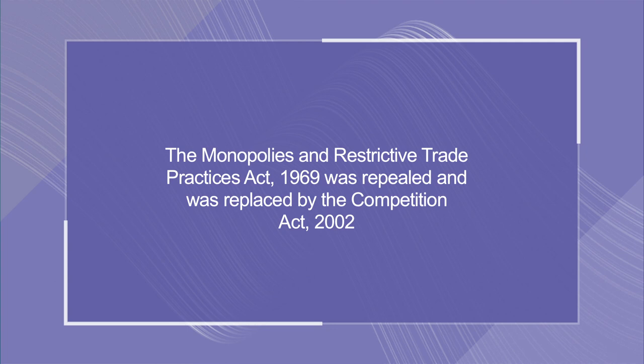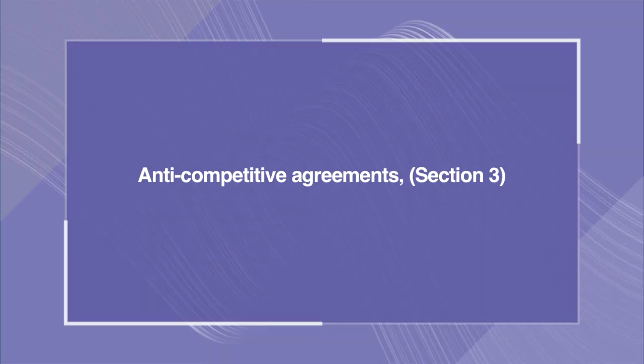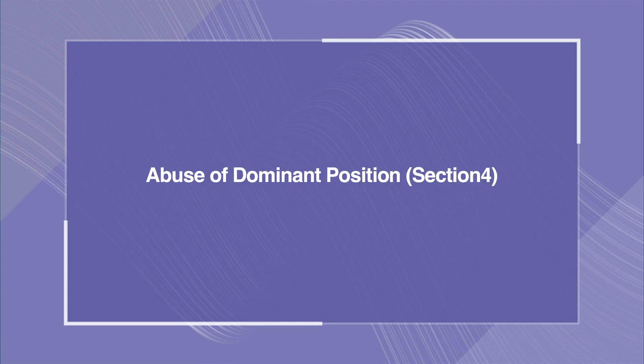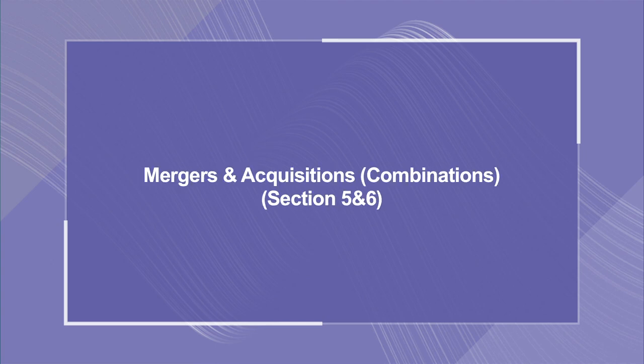Hence, the Monopolies and Restrictive Trade Practices Act, i.e., the MRTP Act 1969, was repealed and was replaced by the Competition Act 2002. The Competition Act provides for the establishment of the Competition Commission of India, which is a quasi-judicial body bound by the principles of the rule of law in giving decisions and the doctrine of precedence. The Competition Commission of India has all the powers of a civil court for gathering evidence. The Act also regulates three anti-competitive behaviours namely: anti-competitive agreements, abuse of dominant position, and mergers and acquisitions which are in the nature of combinations.